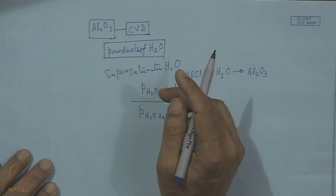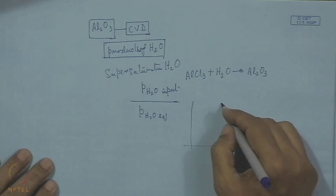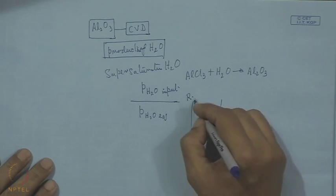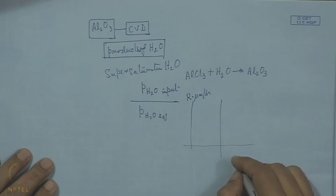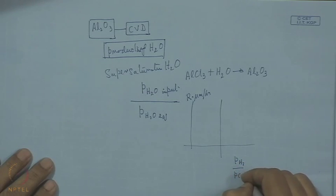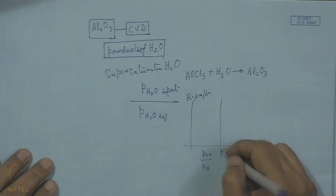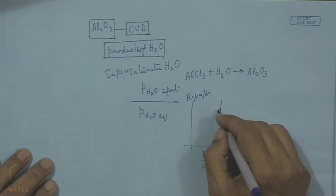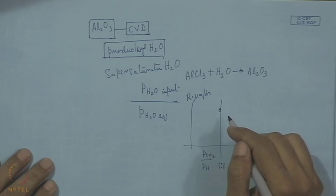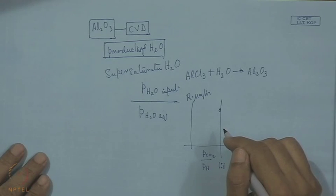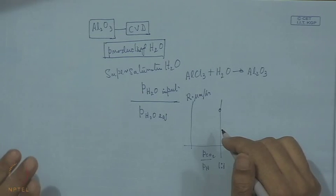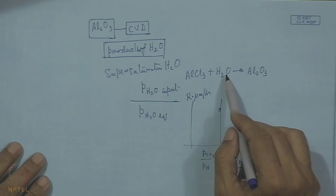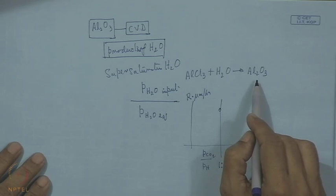This can be shown as yield R (microns per hour) versus P(H₂)/P(CO₂) ratio. At a 1:1 ratio, the growth rate is highest; on both sides there is a decreasing trend. The ratio should ideally be 1:1 to achieve the highest production of H₂O, which leads to the fastest growth rate of Al₂O₃.